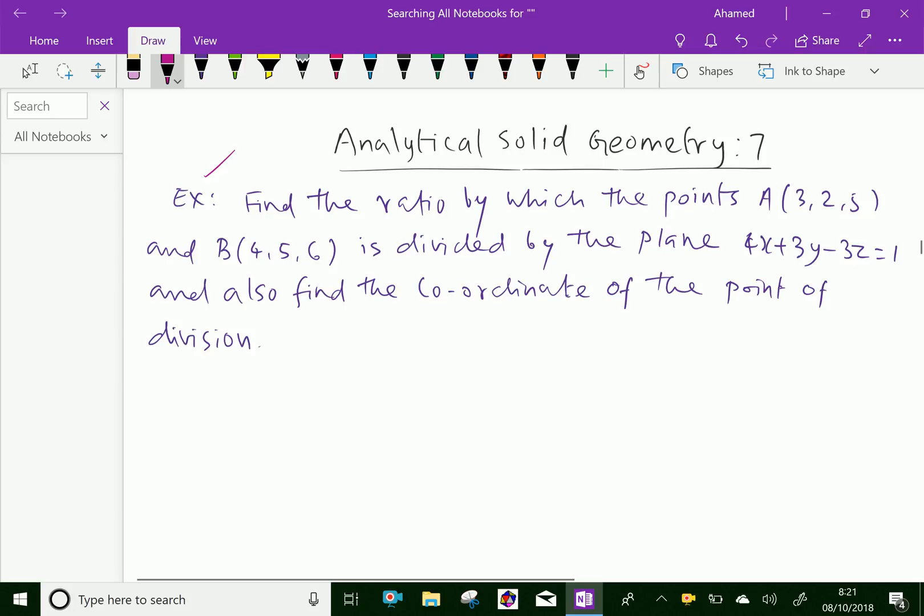Find the ratio by which the point A(3,2,5) and B(4,5,6) is divided by the plane 4x plus 3y minus 3z equal to 1, and also find the coordinate of the point of division.